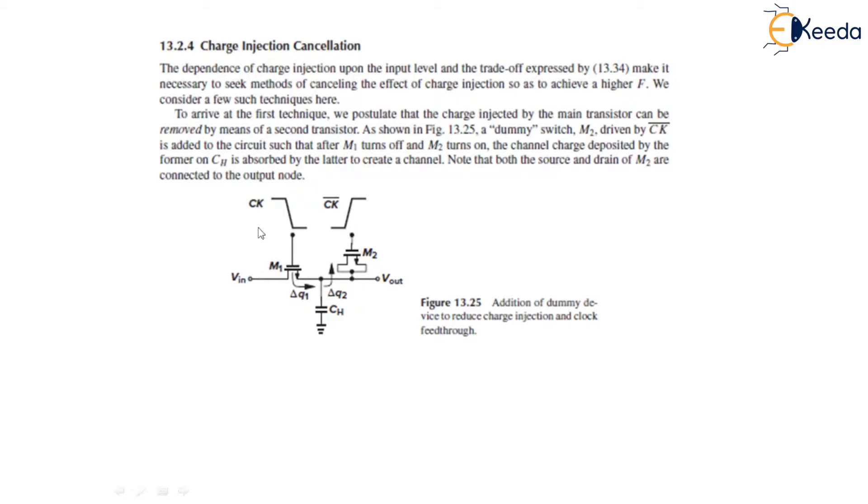The inversion of this clock which is applied to M1, we have applied to M2, and what we have seen is M2 is added to the circuit such that after M1 turns on, M2 turns off, and the channel charge that is deposited by the former on C_H is absorbed by the latter to create a channel. Note that both the source and drain of M2 are connected to the output node.